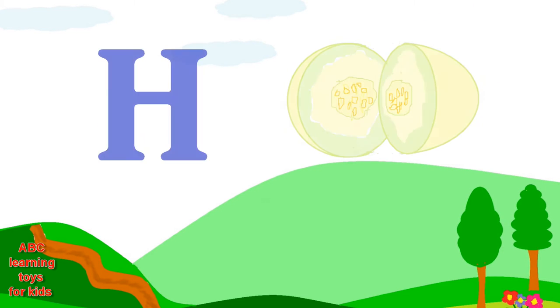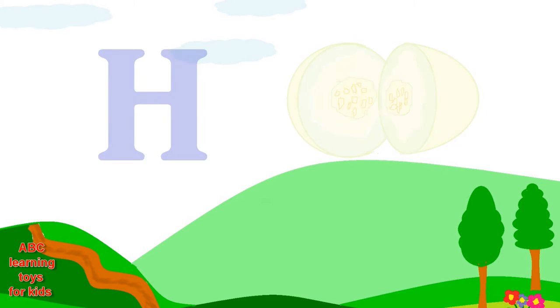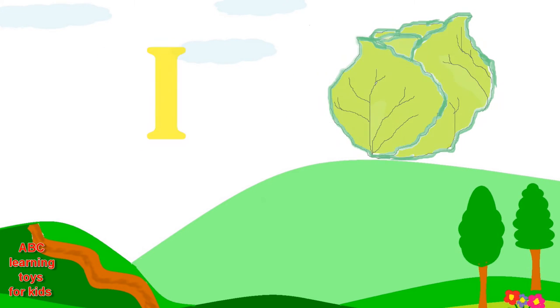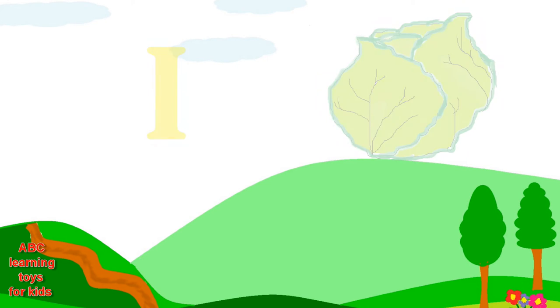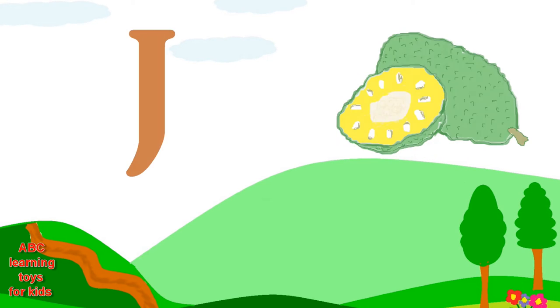H is for honeydew. Honeydew. I is for iceberg lettuce. Iceberg lettuce. J is for jackfruit. Jackfruit.